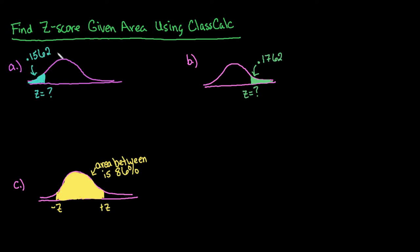Alright, so if you are trying to find the z-score, you do need to know the area to the left. So if you're not given the area to the left, you do need to find that. In the first one, we are given the area to the left, and since it's less than 50% is shaded, we know that our z-score should be negative.